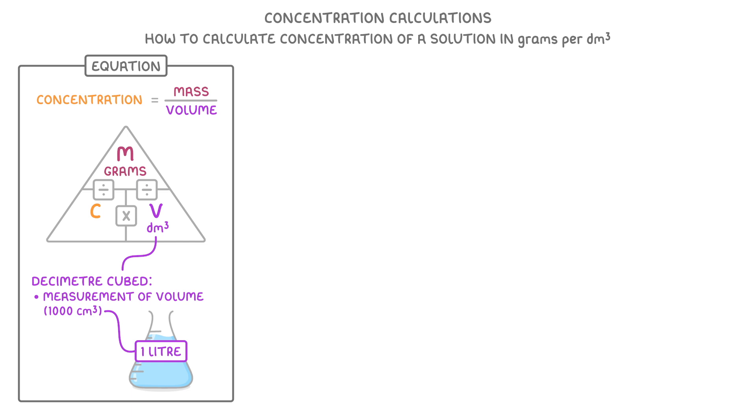So, you just cover up the thing that you want, and read the triangle. So if we wanted to find the concentration, we'd cover up the C, and do mass divided by volume. Or if we wanted the mass, we'd do concentration times volume. Finally, if we wanted volume, we'd do mass divided by concentration.